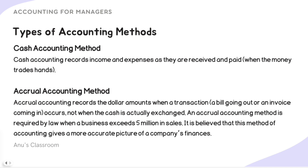Now let us look at the different types of accounting methods. The cash accounting method records incomes and expenses as they are received or paid — that is, when money actually changes hands. This is different from the single entry versus double entry distinction we just covered; now we are talking about when transactions are recorded. If you need an in-depth video on either method, let us know in the comments.